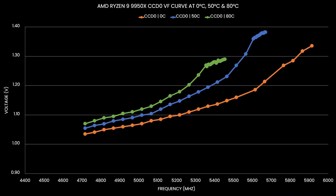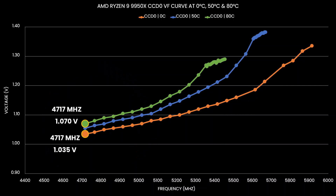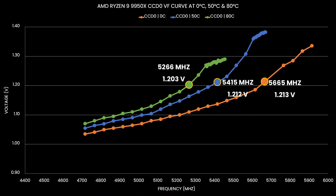We can immediately make a couple of important observations. First, this CPU clearly has different voltage-frequency curves at different temperatures, highlighting that we should always talk about a Ryzen's VFT curve rather than just the VF curve. Furthermore, the VF curve deviates more at higher frequencies than at lower frequencies. For example, the difference at 4.7 GHz between 0 and 80 degrees is only 35 mV, but at 5.3 GHz the difference is 116 mV. Lastly, at a similar voltage there's much more frequency headroom at lower temperatures — 1.2V yields 5,226 MHz at 80°C, 5,415 MHz at 50°C, and well over 5.6 GHz at 0°C.